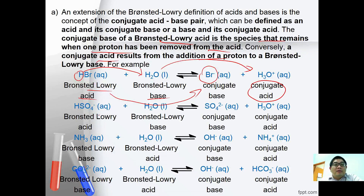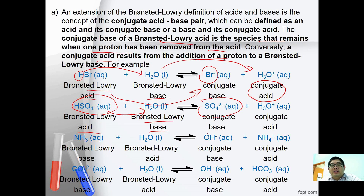Another example is HSO4- plus H2O. The H is donated to the water, so HSO4- acts as a Bronsted-Lowry acid, which is a proton donor, while water acts as a Bronsted-Lowry base, which is a proton acceptor. Upon donating the proton, HSO4- becomes SO42-, which is the conjugate base. Water after accepting the proton becomes H3O+, which is the conjugate acid.